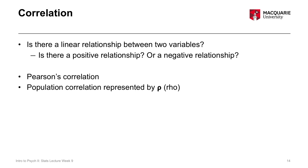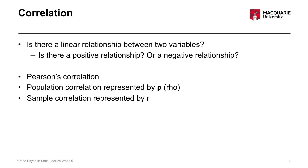The correlation coefficient in the population is represented by the symbol rho — a Greek letter that looks a little like a funny P. The sample correlation is represented by r. So r equals some number is the notation for our correlation coefficient, just like for a t-test it was t equals some number.